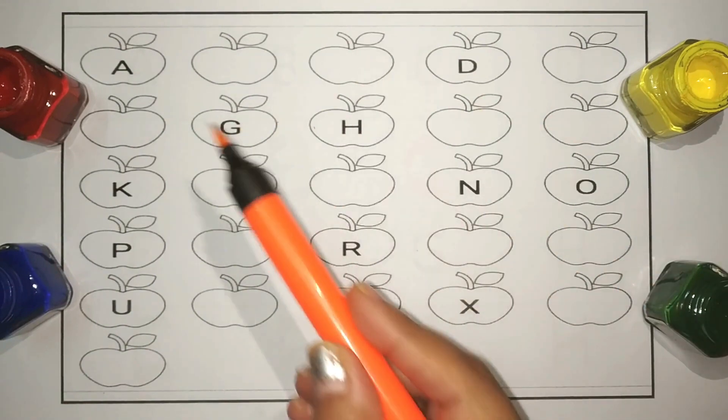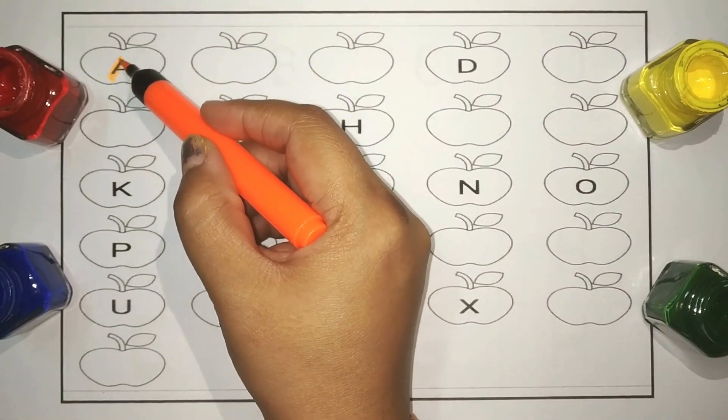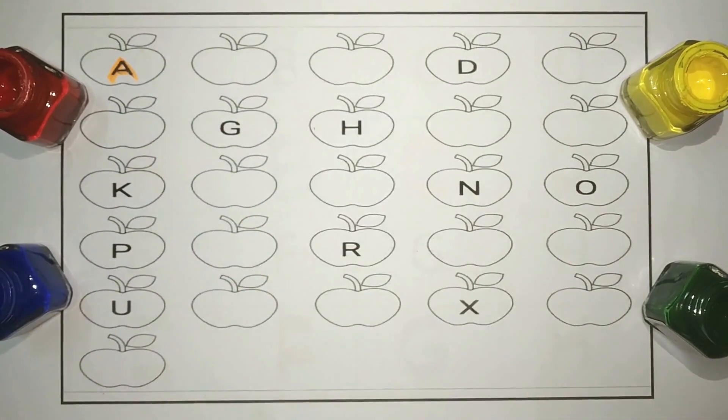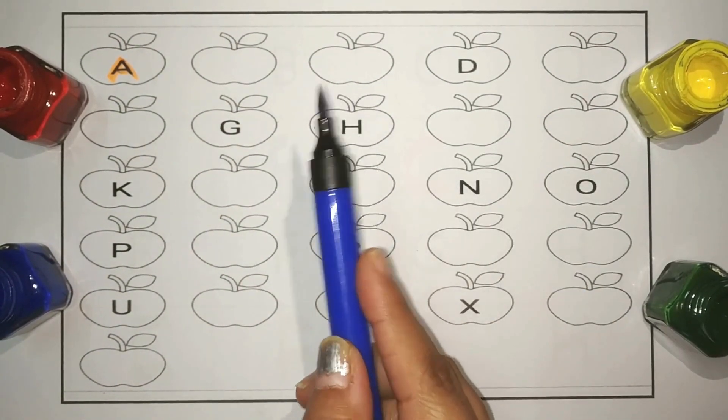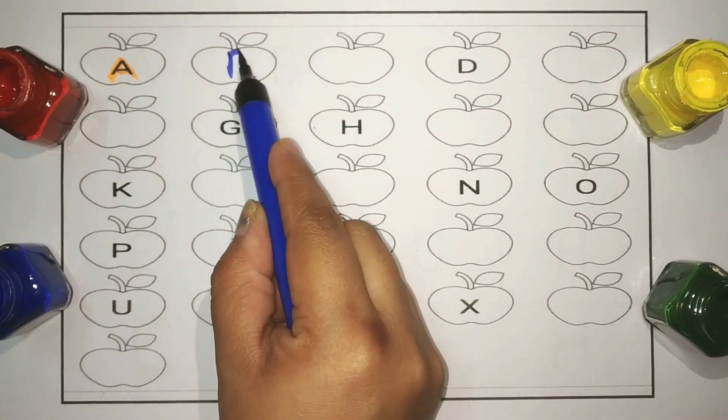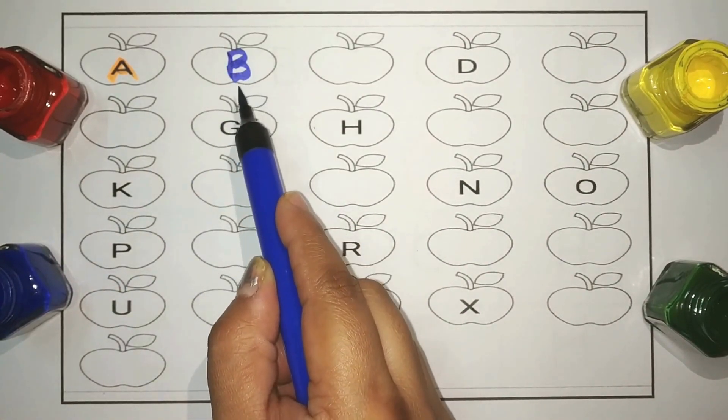Orange. A for apple. Blue. What comes after A? B. B for ball.